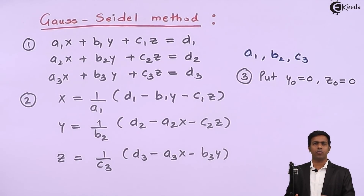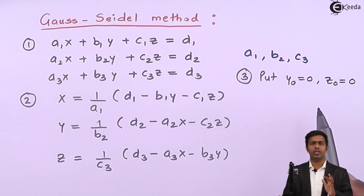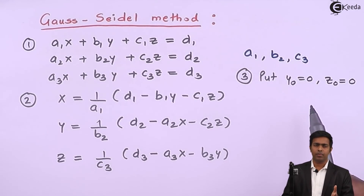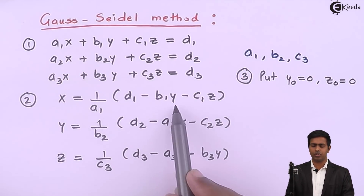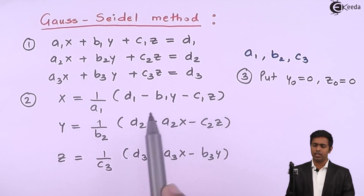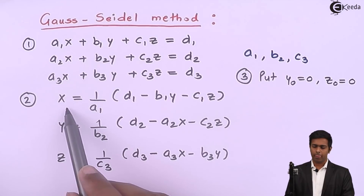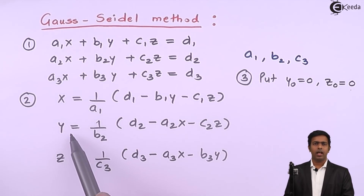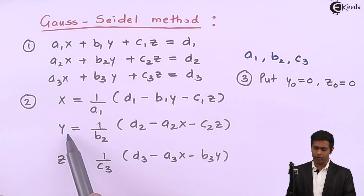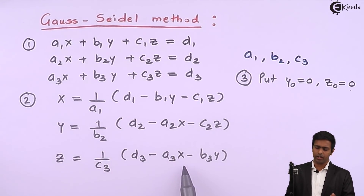In Jacobi's method, we assume all three roots x₀, y₀, z₀ as zero, find x₁, y₁, z₁, and then use them all in the next iteration. But in Gauss-Seidel, we only set y₀ = z₀ = 0, find x₁, and immediately use x₁ in the next calculation. Since we don't yet have a new z, we still use z₀ = 0 to find y₁. As soon as y₁ is found, we use y₁ (and x₁) to find z₁.